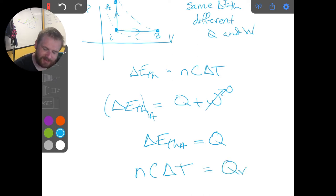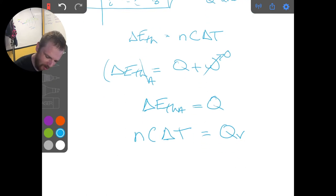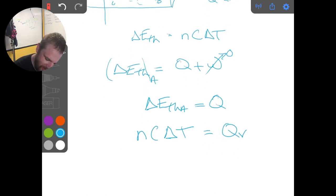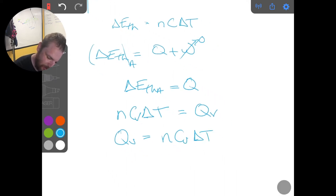I'm going to call this Q sub V, because it's a constant volume, and we're also going to call this NCV delta T. So we end up with an expression, Q sub V, which is the heat exchange in a constant volume process, is equal to NCV delta T. And so this is true for only isochoric processes only.